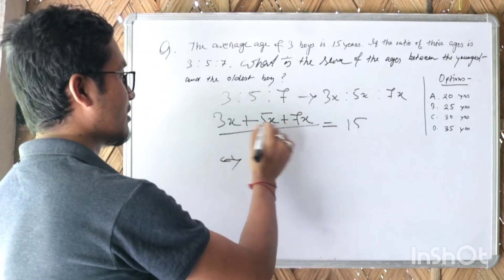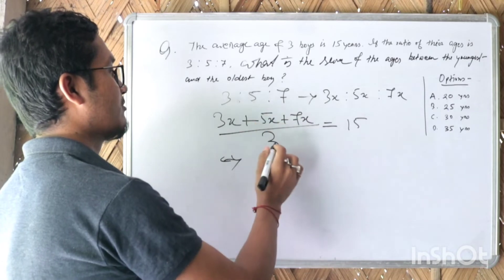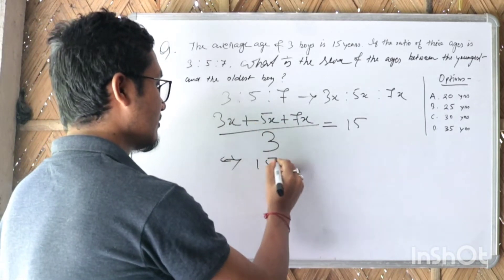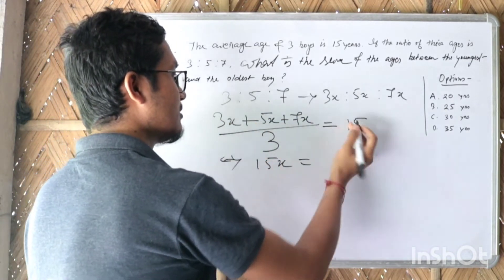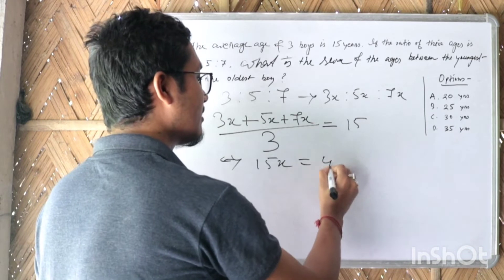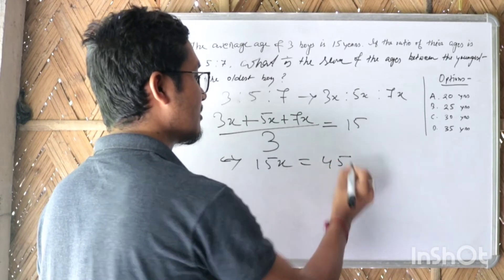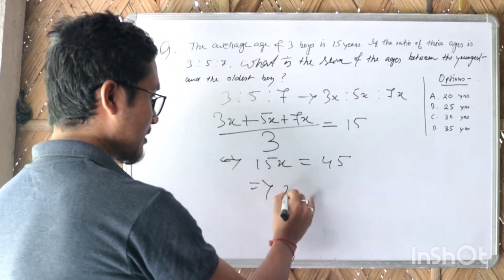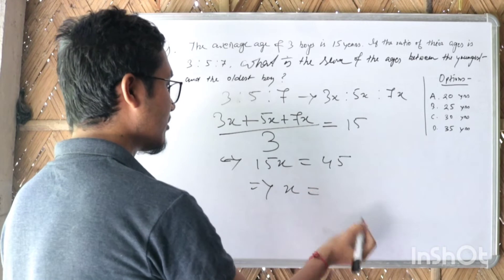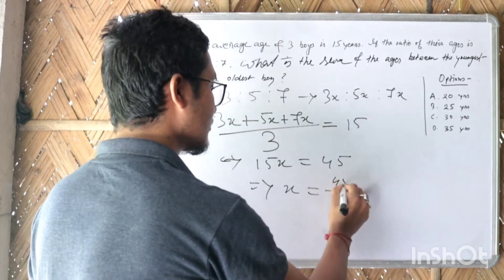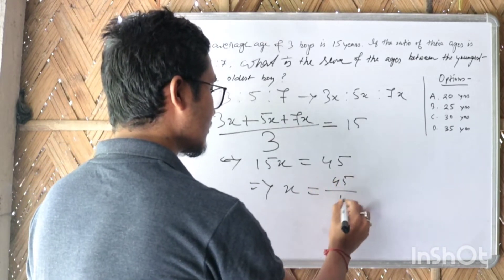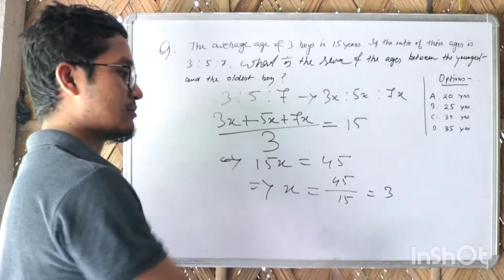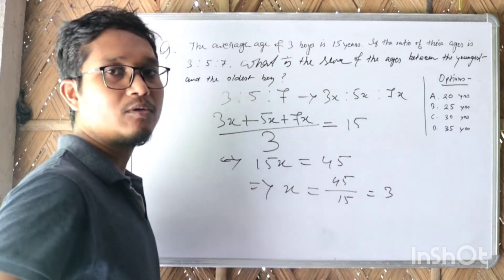How do we solve this? We have 15x equals 45. So x is equal to 45 divided by 15, which gives us x equals 3.